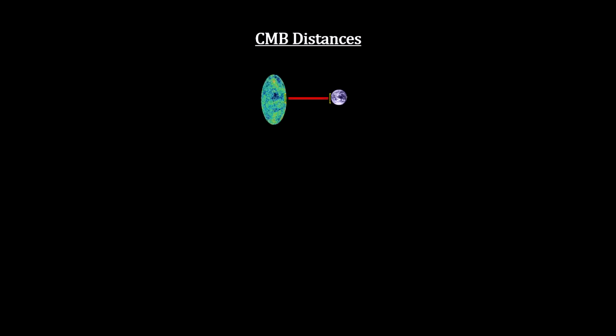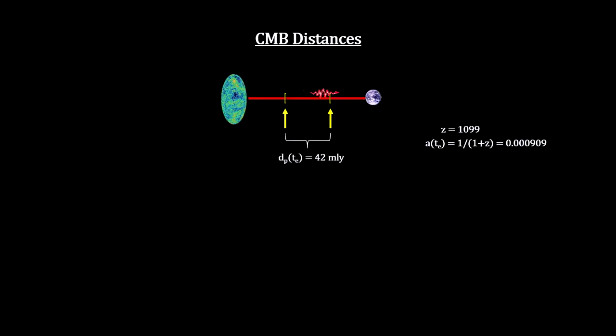For the CMB radiation, the redshift tells us that the light we see now was only 42 million light-years away from our location when it was emitted.